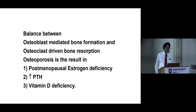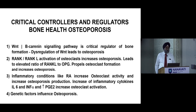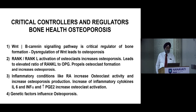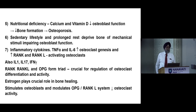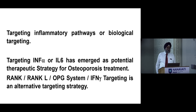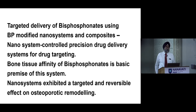There must be a balance between osteoblast formation and osteoclast resorption. Critical controllers and regulators in bone health include the WNT pathway, RANK-L activation of osteoclasts, and inflammatory conditions like RA — which increase osteoclast activity — along with elevated IL-6, TNF-alpha, and PGE2 levels. Genetic factors, nutritional deficiency, and sedentary lifestyle also play important roles. Targeting inflammatory pathways through biological therapies represents the next frontier of treatment.